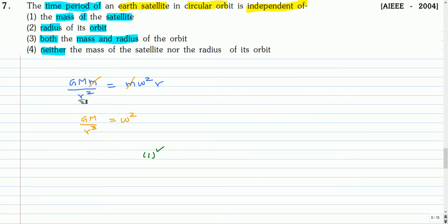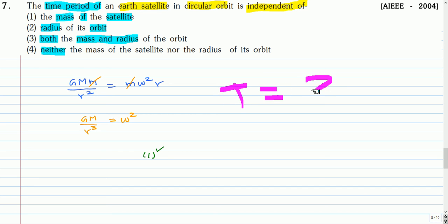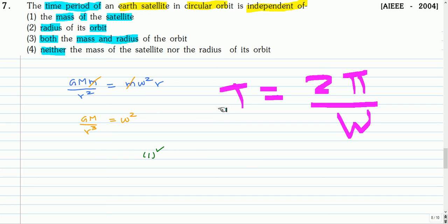The gravitational force on the satellite is GMm/r², which provides the centripetal acceleration mω²r. From this we get ω² = GM/r³, and the time period T = 2π/ω. Since ω is independent of the mass of the satellite, the time period T is also independent of the satellite's mass. However, ω depends on the radius of the orbit, so the time period also depends on the radius. The correct option is option one.